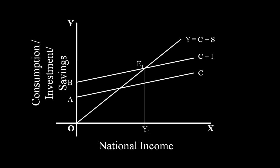At equilibrium, Aggregate Supply Y1E1 equals Aggregate Demand Y1E1. At this income level, the community plans to spend Y1G on consumption and save GE1. The community's planned investment also equals GE1.